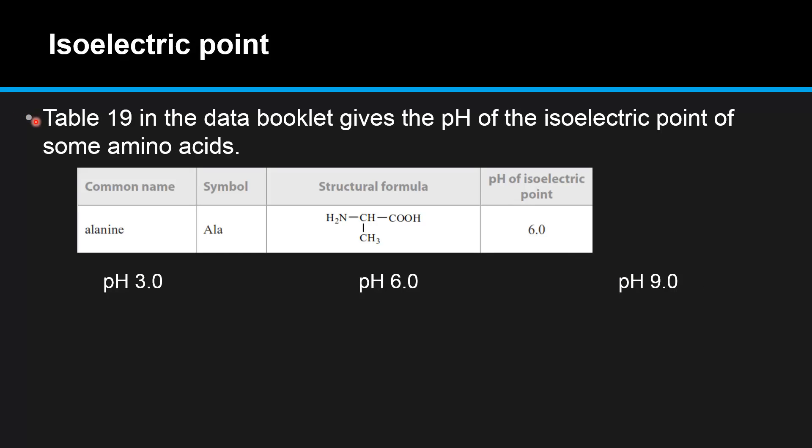Table 19 in the data booklet gives the pH of the isoelectric point of some amino acids. So here is an example. We have alanine. The symbol is ALA and here is the structural formula. And the pH of the isoelectric point is 6.0.